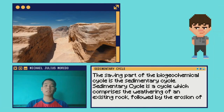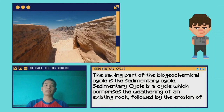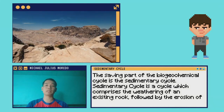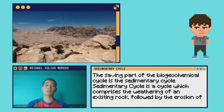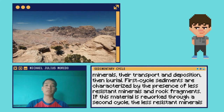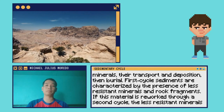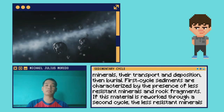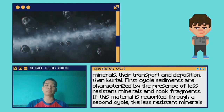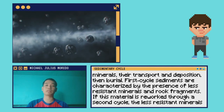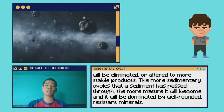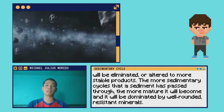The second part of the biogeochemical cycle is the sedimentary cycle. The sedimentary cycle comprises the weathering of an existing rock, followed by the erosion of minerals, air transport, deposition, and burial. In the first cycle, sediments are characterized by the presence of less resistant minerals and rock fragments. If this material is returned to a second cycle, the less resistant minerals will be eliminated or altered to a more stable product.